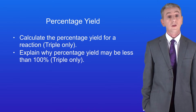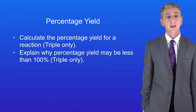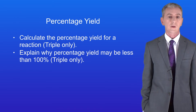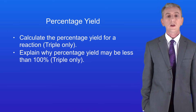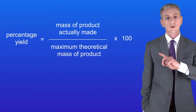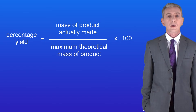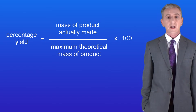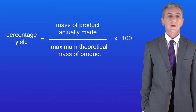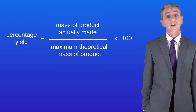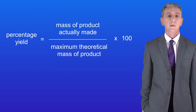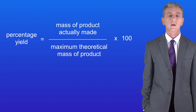In the last video we saw how to calculate the percentage yield for a reaction. We use this equation: the percentage yield equals the mass of product actually made divided by the maximum theoretical mass of product, multiplied by a hundred.